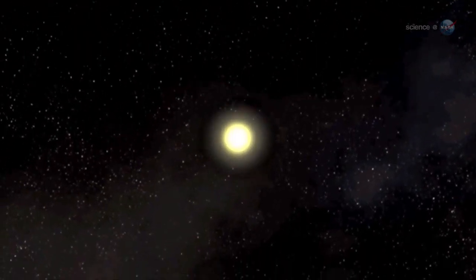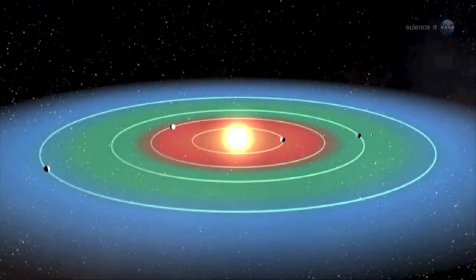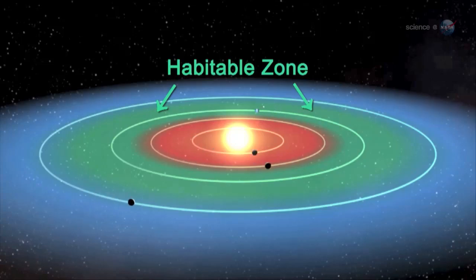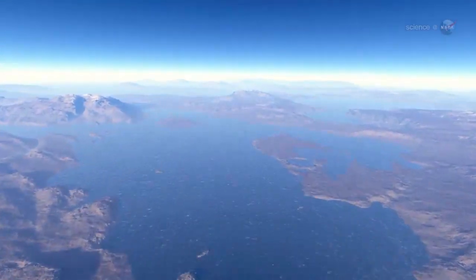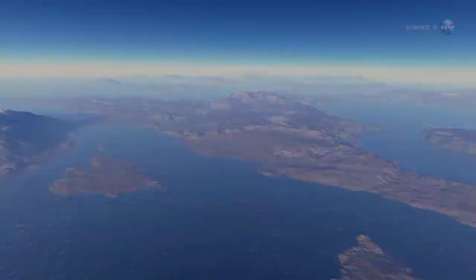Four of the new planets are less than two and a half times the size of Earth. Moreover, they orbit in their sun's habitable zone, where the surface temperature of the planets may be suitable for liquid water, a key ingredient for life as we know it.